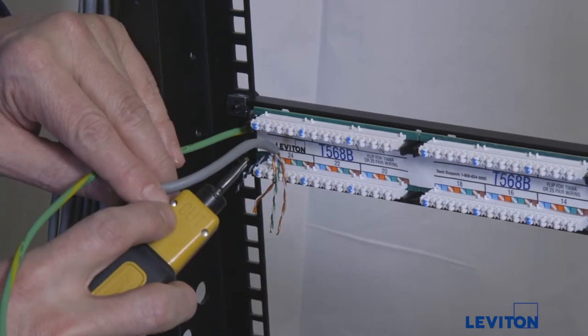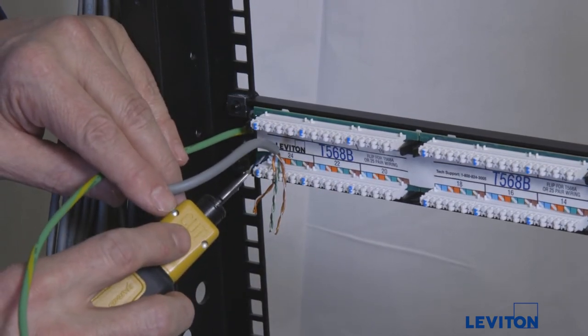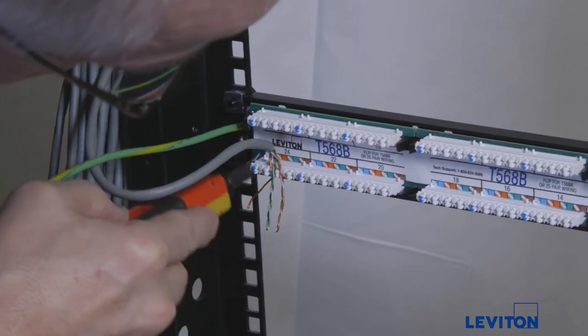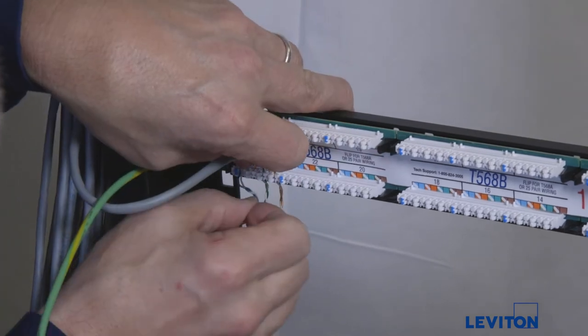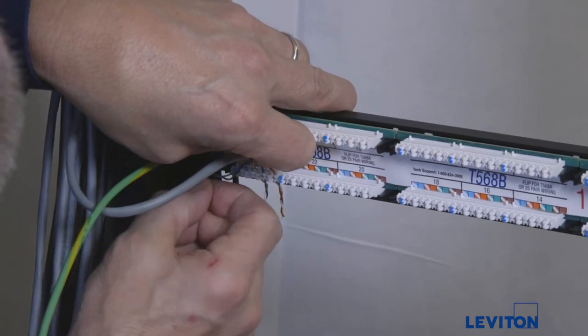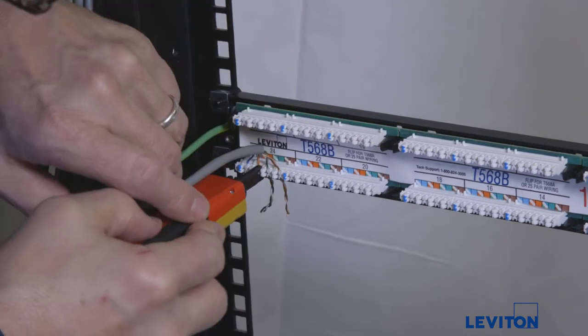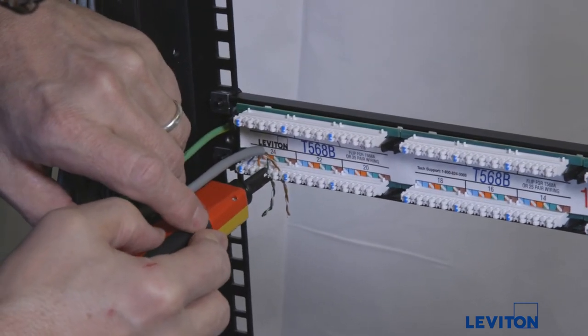Position the punch tool with the cutting side which is yellow facing down. Position the three remaining pairs in the port following the wiring diagram. Punch down the pairs and inspect each termination.